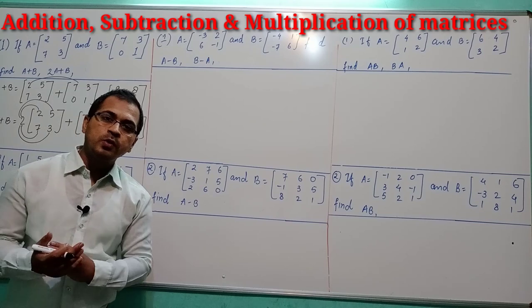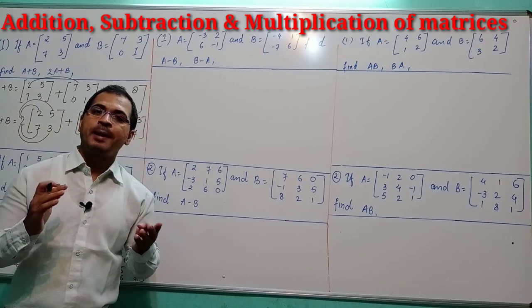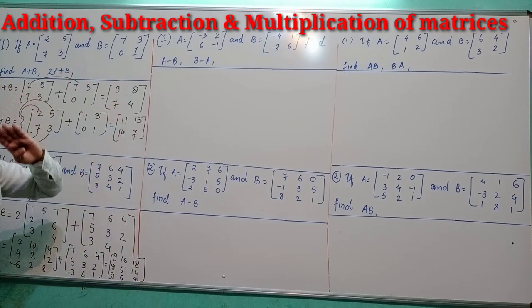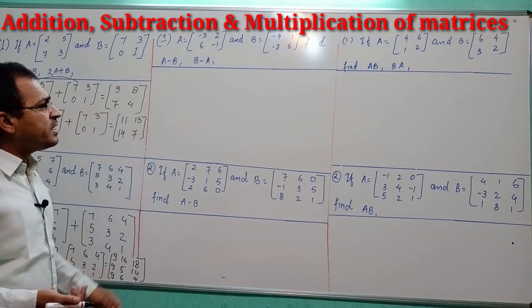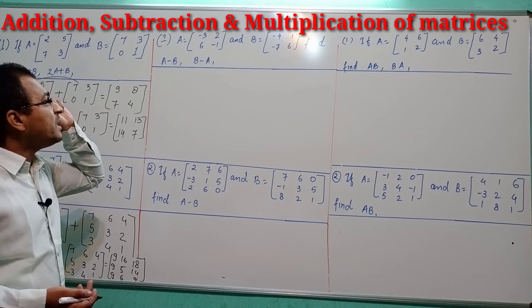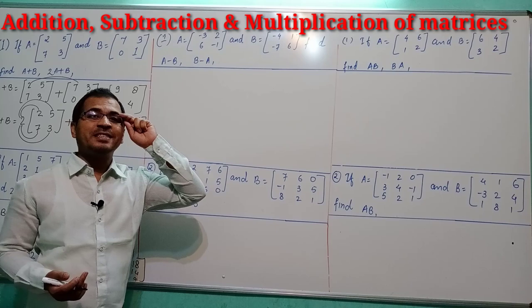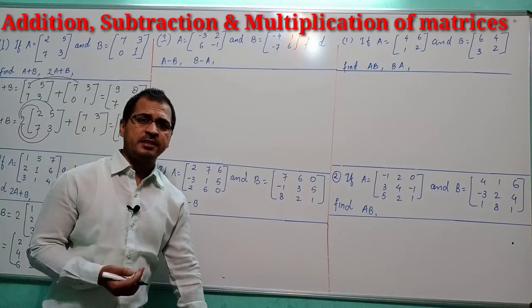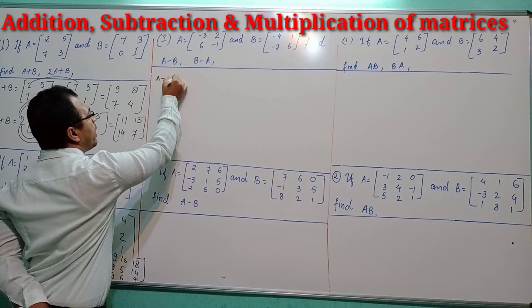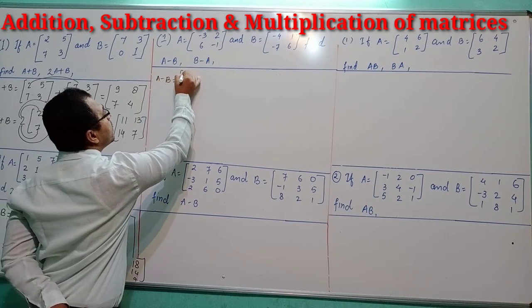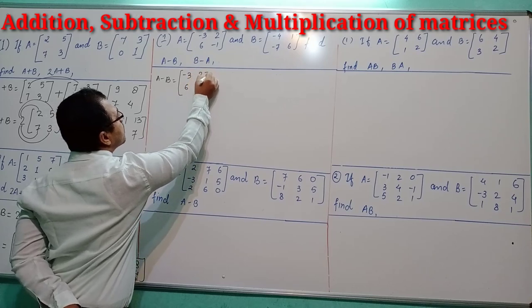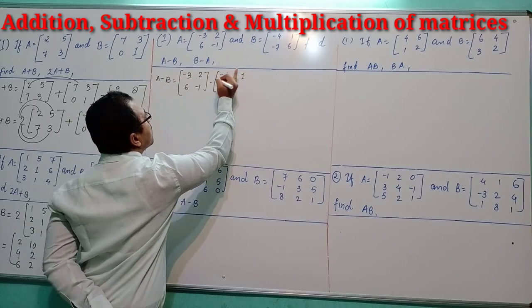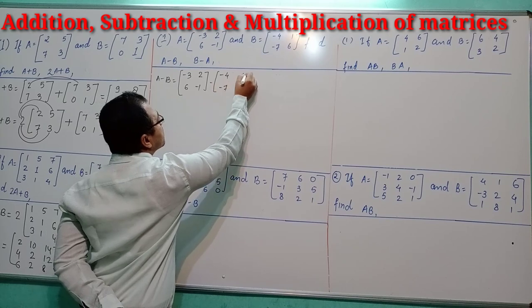That is the process for addition of matrices, whether it is 2 by 2 or 3 by 3. Now moving to the next topic: subtraction of matrices. In the first question, you can see that matrix A and matrix B both have dimension 2 by 2. We have to find A minus B, where A is [−3, 6; 2, −1] and B is [−4, 1; −7, 6].